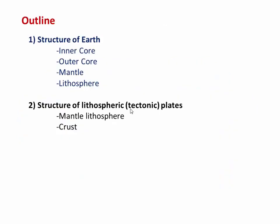To understand this, we're going to take a look at the structure of Earth — what does Earth look like beneath the surface? We'll see that it's divided into an inner core, an outer core, a mantle, and then the lithospheric plates that we live on. And in the second part of the video, we'll look in more depth at the structure of those lithospheric or tectonic plates, and I'll show you that they're made of a combination of mantle lithosphere and crust.